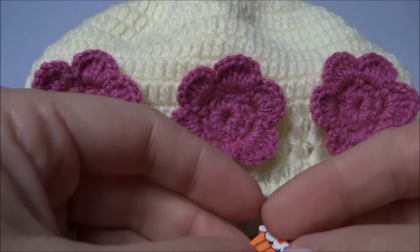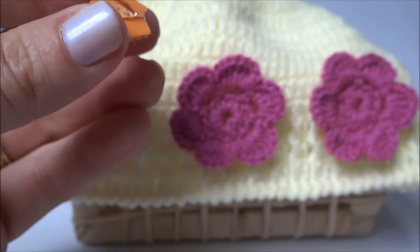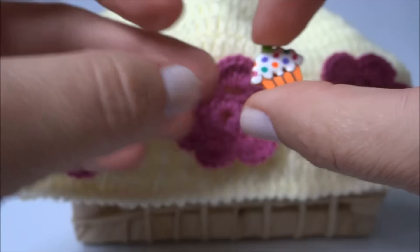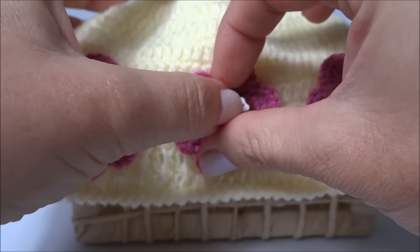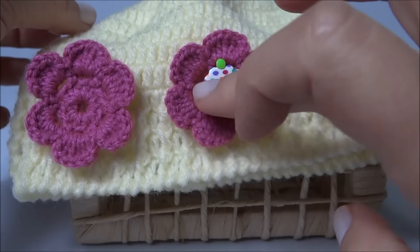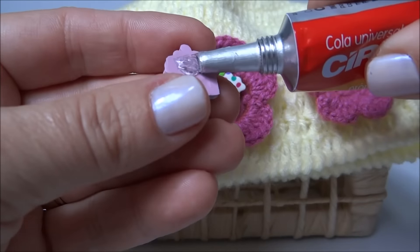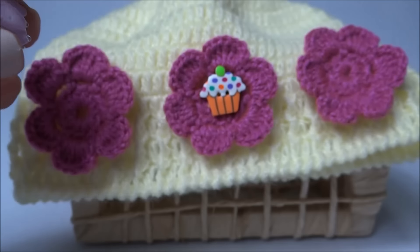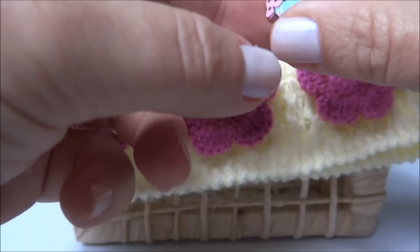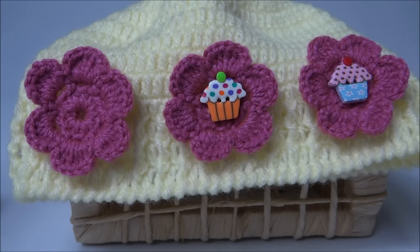Aqui eu já guardei o tempo de secagem e vou repetir o mesmo processo com os botões. Pingo no centro do botão, um pinguinho de cola e aplico no centro da flor. Pego o próximo e repito o mesmo processo. Um pinguinho de cola no centro do botão e aplico no miolinho da flor. Vou repetir o mesmo com o outro, aguardar o tempo de secagem e volto mostrando a nossa peça finalizada.